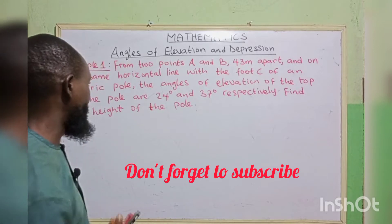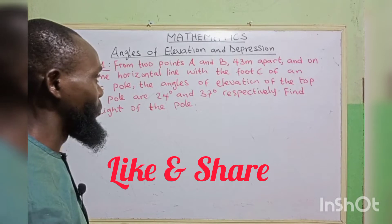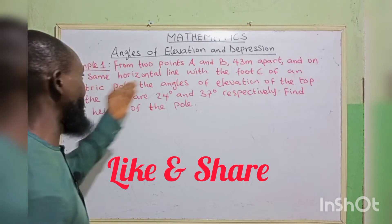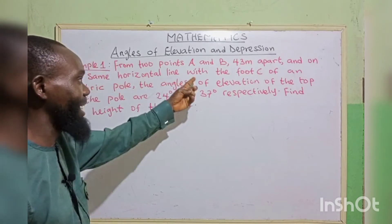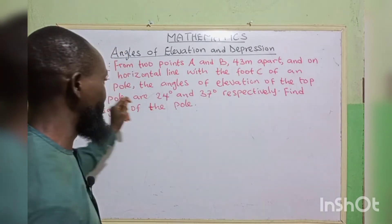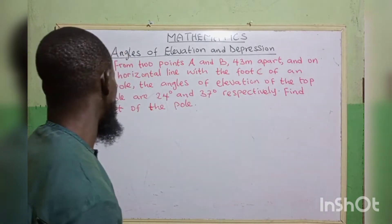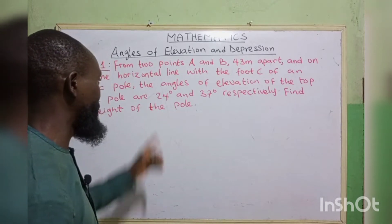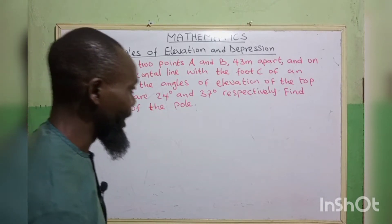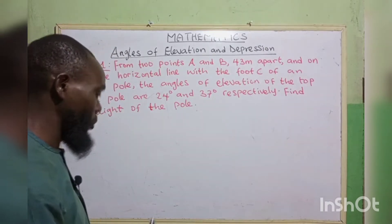Example 1. From two points A and B, 43 meters apart, and on the same horizontal line with the foot C of an electric pole, the angles of elevation of the top of the pole are 24 degrees and 37 degrees respectively. Find the height of the pole.